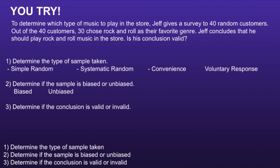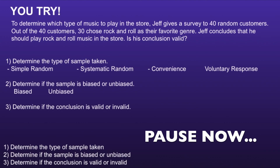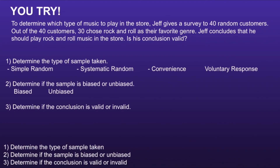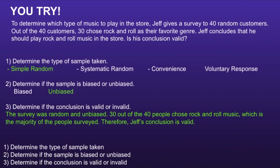Here's one more problem to try. To determine which type of music to play in the store, Jeff gives a survey to forty random customers. Out of the forty customers, thirty choose rock and roll as their favorite genre. Jeff concludes that he should play rock and roll music in the store. Is his conclusion valid? The sample type was a simple random sample, which is an unbiased sample type. Since the survey was random and unbiased, and thirty out of forty people chose rock and roll — the majority of those surveyed — we can conclude that Jeff's conclusion is valid.